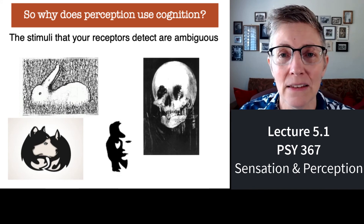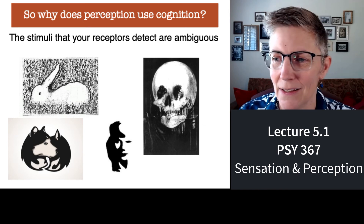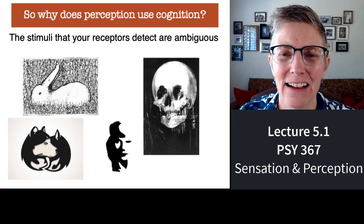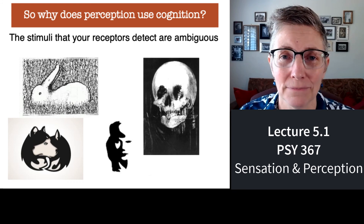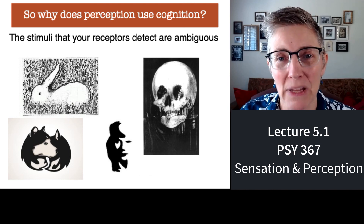On the far right is a picture of either a skull or two women — dressed in what looks like 1800s clothing — together by candlelight. Stimuli are actually ambiguous; what we see can be interpreted in many different ways. We're going to talk about why the structure of your visual system renders many images — all images — ambiguous.